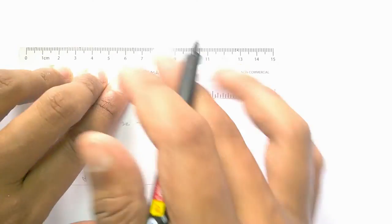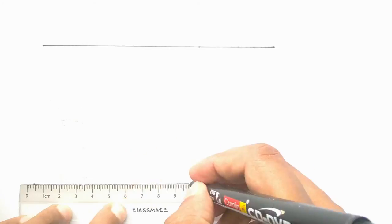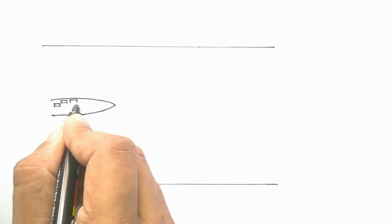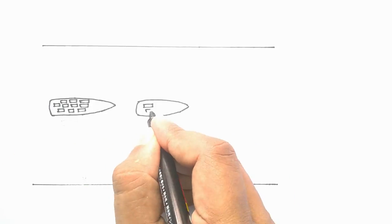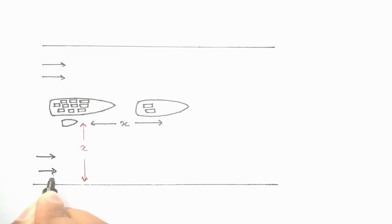For convenience, let us have a look at the top view of the situation. Now we are talking about a river, so you have to keep in mind that there must be some stream velocity.